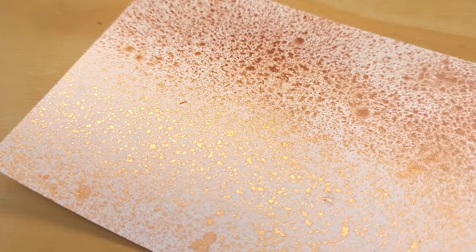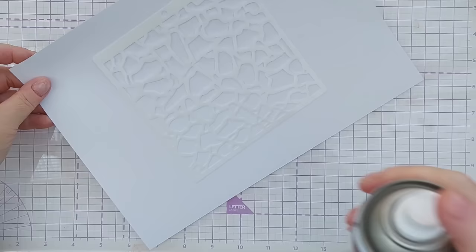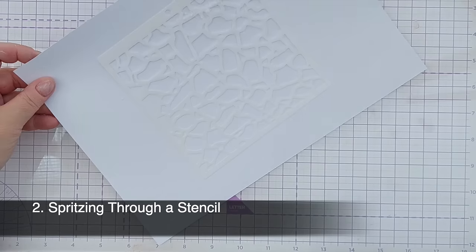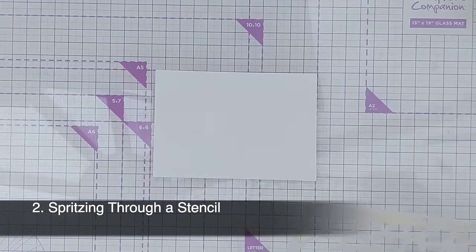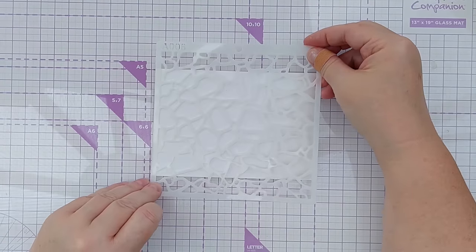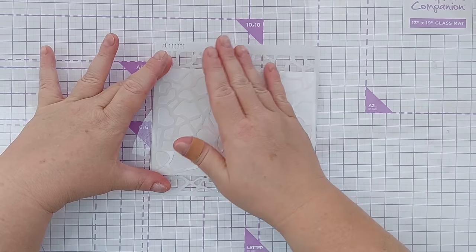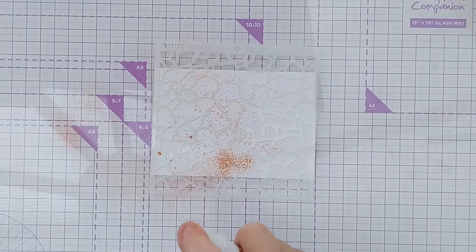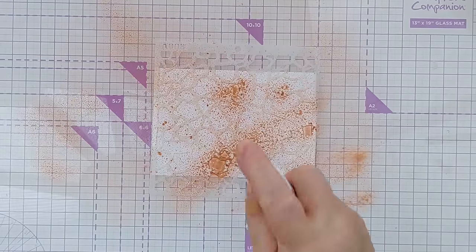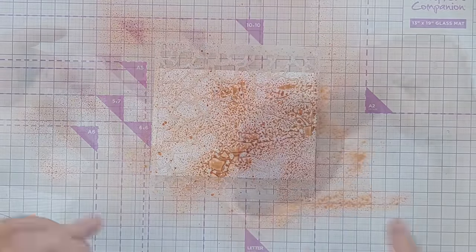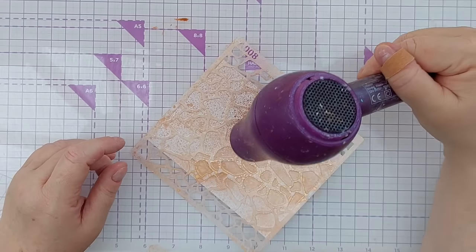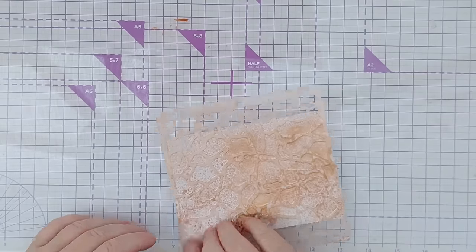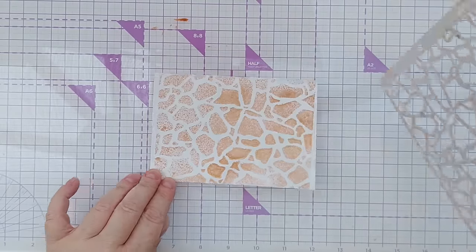Technique number two is spritzing through a stencil. So I've just sprayed my stencil with some spray and stick, which is a repositionable adhesive, and then I've put the stencil sticky side down on a piece of card and then spritzed through the stencil. I've done that because I didn't want any of the shimmer spray to leak underneath the stencil. Once that was dry I peeled the stencil off and you can see the shimmery stencil pattern that you get.